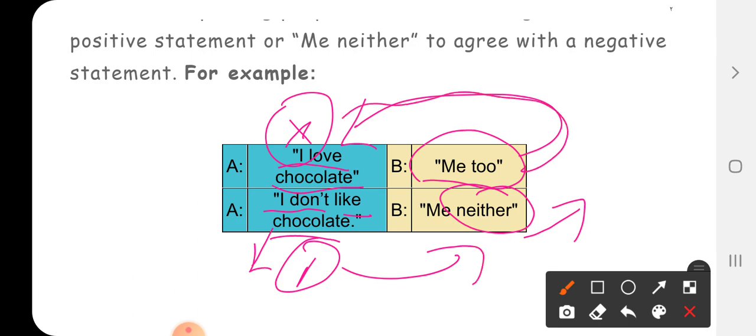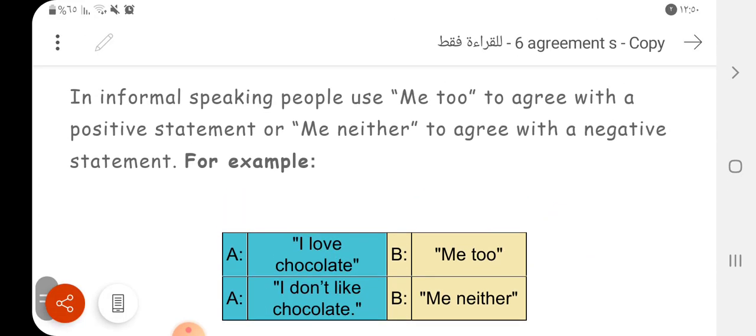Now, I don't like chocolate, we can use me neither. Okay, negative statements we just put it me neither. If we have positive statement we just put it me too. Okay, it's not so easy and I'll see you later.